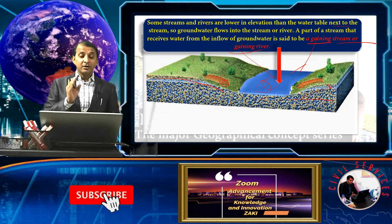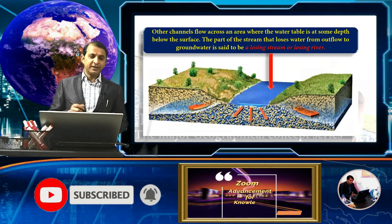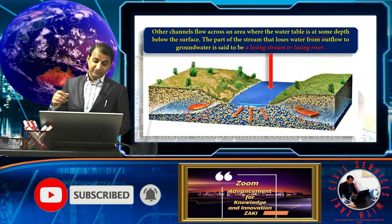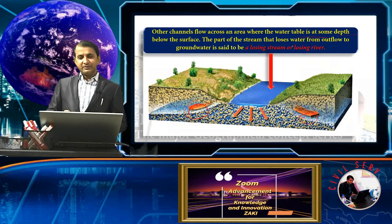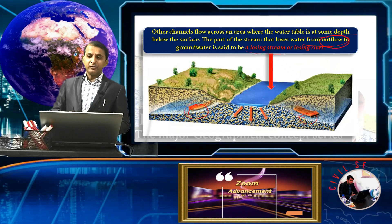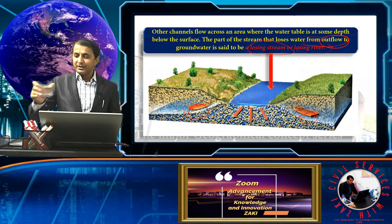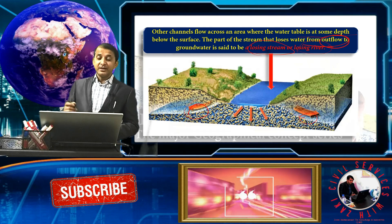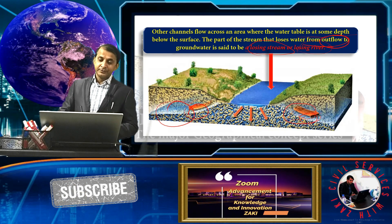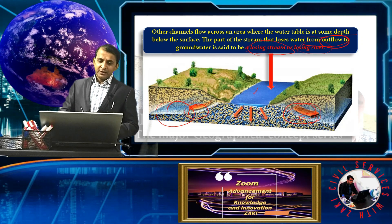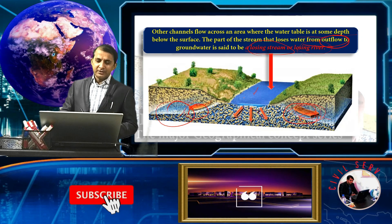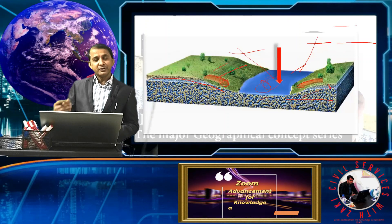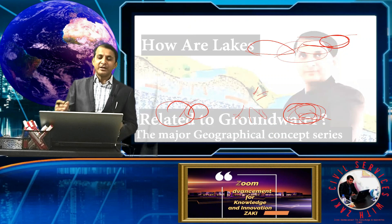Opposite to the gaining stream situation is the losing river. Other channels flow across areas where the water table is below the depth of the surface. The part of the stream that loses water to outflowing groundwater is called a losing stream or losing river. In this case, the river loses water downward — shown by the arrows — while gaining rivers receive water from groundwater.